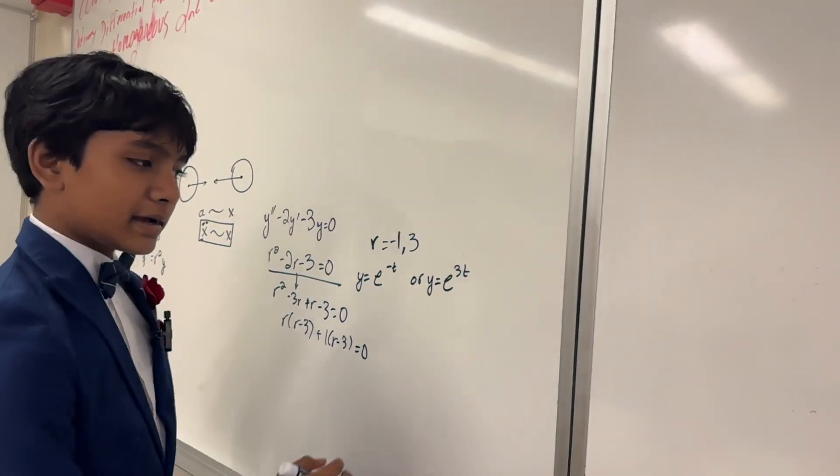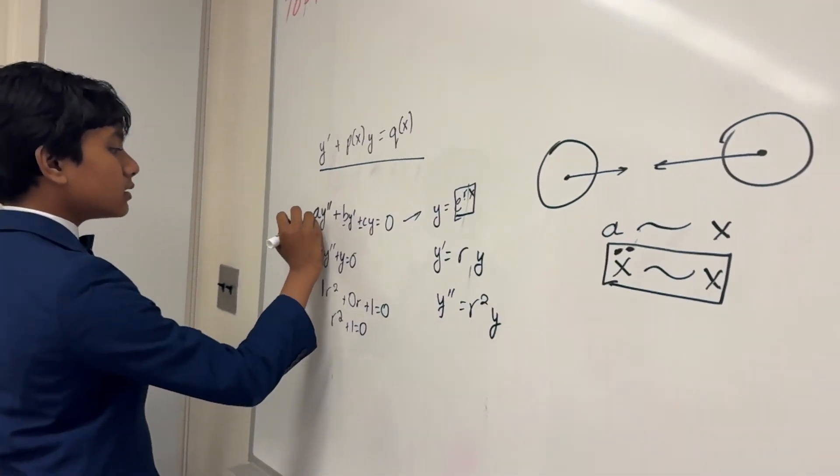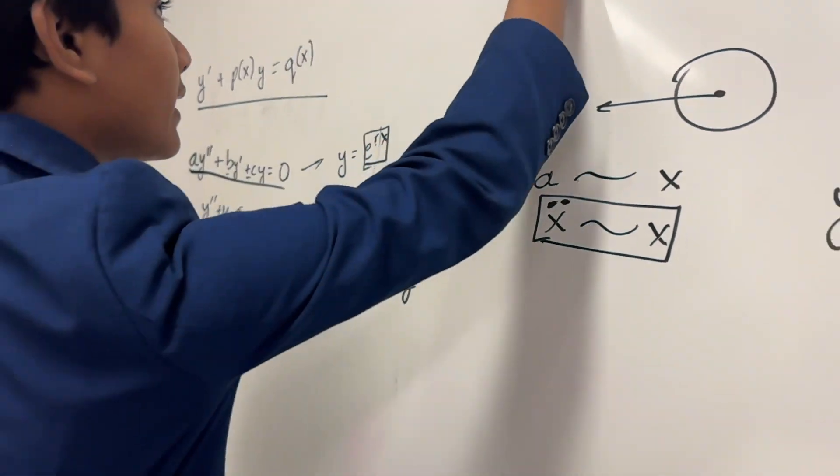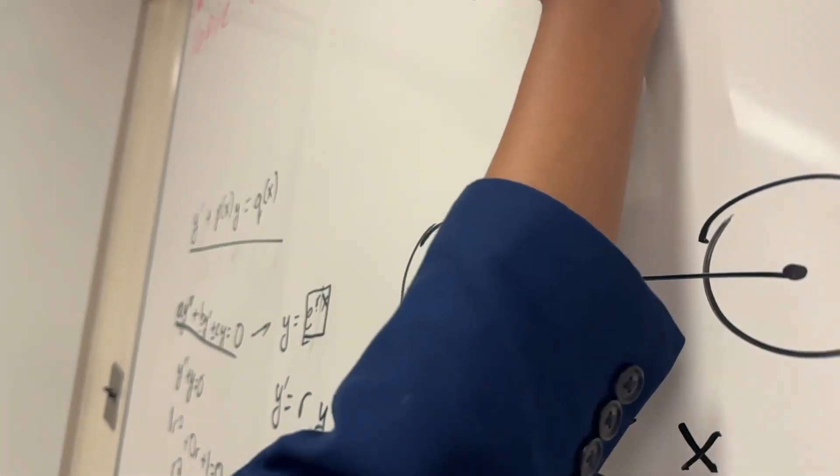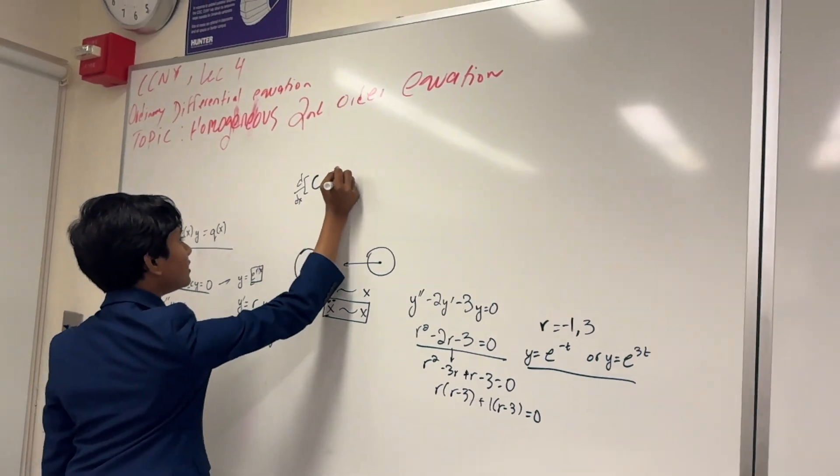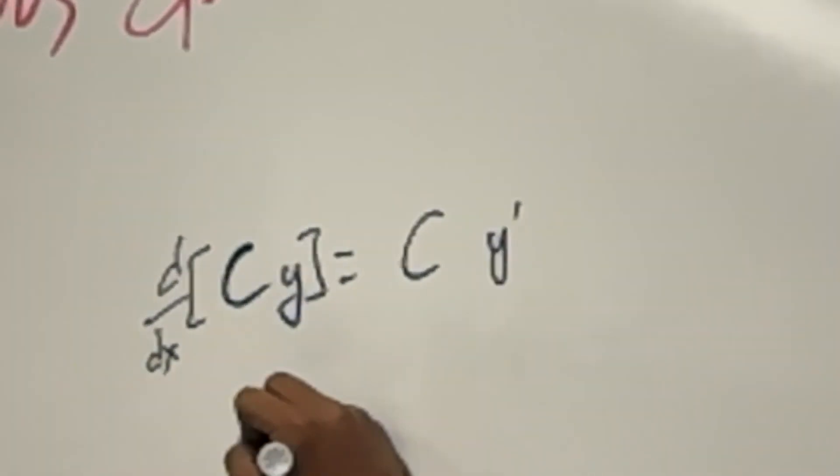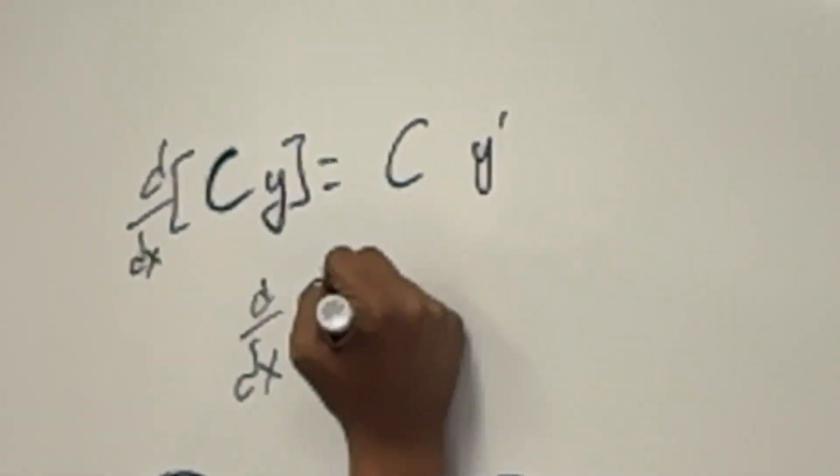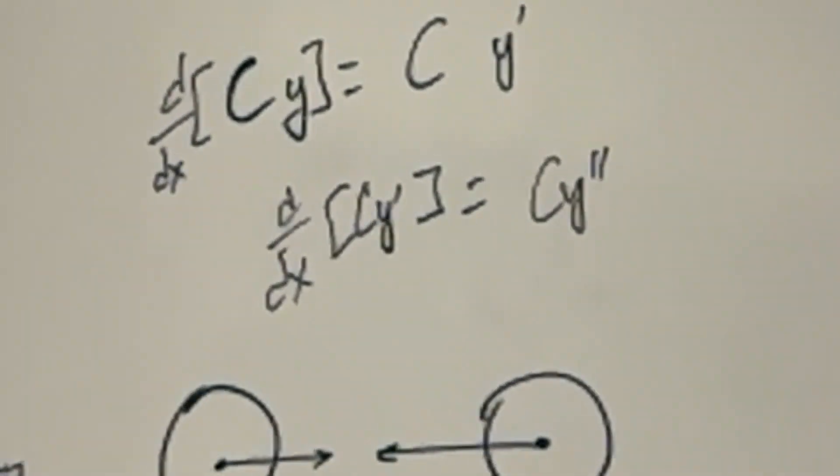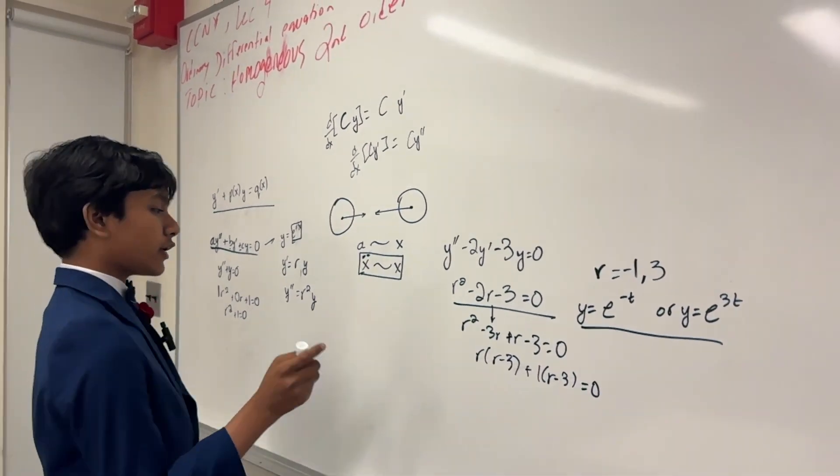Or are they? Because we can actually make any combination of them and plug this in. How does that work? Well, remember that if we take the constant times our function, then the derivative of this is just going to be equal to the constant times that first derivative, and taking the derivative of it again is going to give the constant times the second derivative. How is this useful, you might ask? Is this just basic calculus?